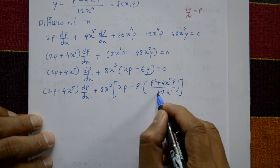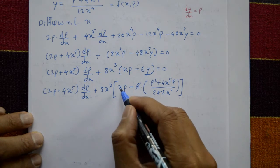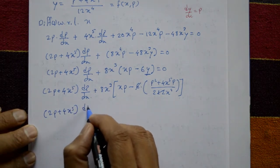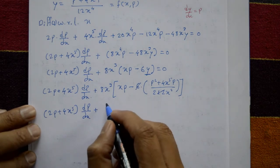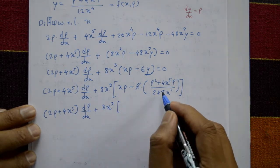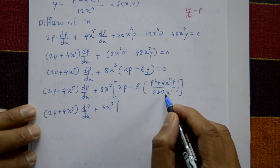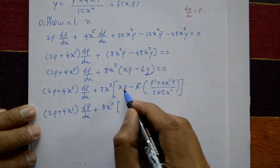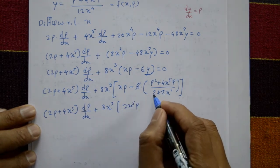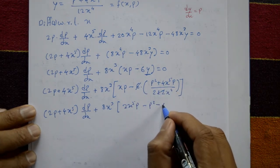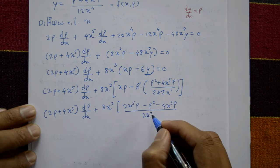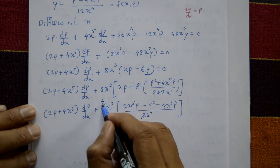Simplifying: 6 and 12 cancel leaving 2, so 6 over 12x to the 4 becomes 1 over 2x to the 4. Cross-multiplying and simplifying: 2p plus 4x to the 5 times dp/dx, plus 4 over x times (2x to the 5 times p minus 4x to the 5 times p minus p squared minus 2x to the 5 times p) equals 0. After cancellations, x to the 4 divides out leaving terms in x cubed and x.